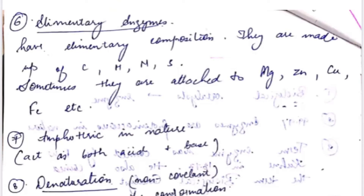Now let's look at the properties of enzymes. The first one is their elemental composition — they are made up of carbon, hydrogen, nitrogen, and sometimes sulfur. They are sometimes attached to magnesium, zinc, copper, or iron.